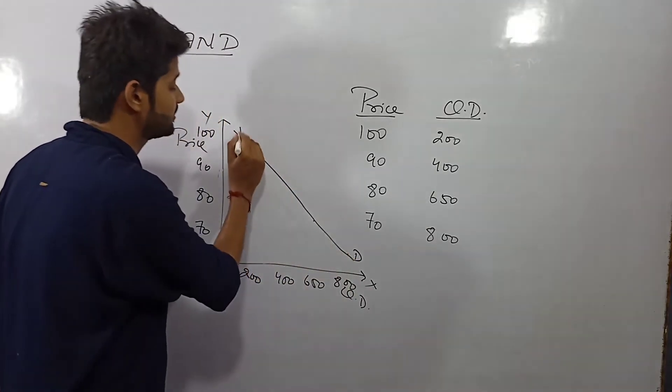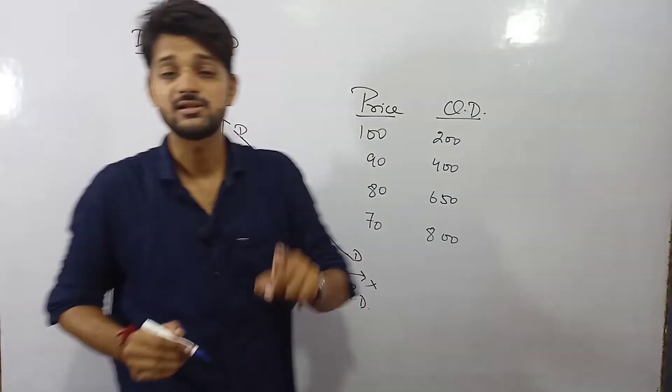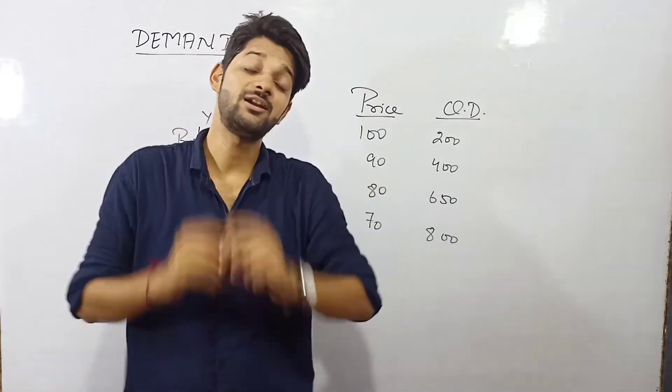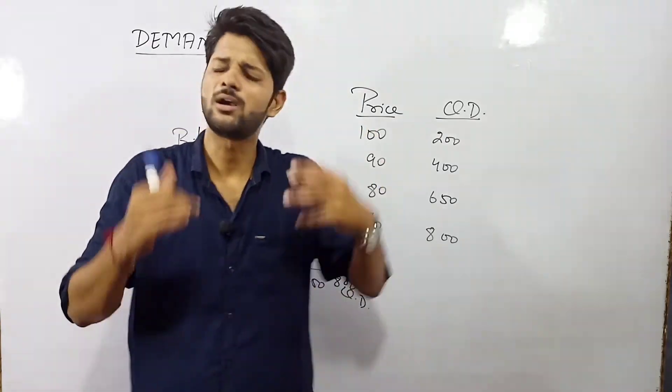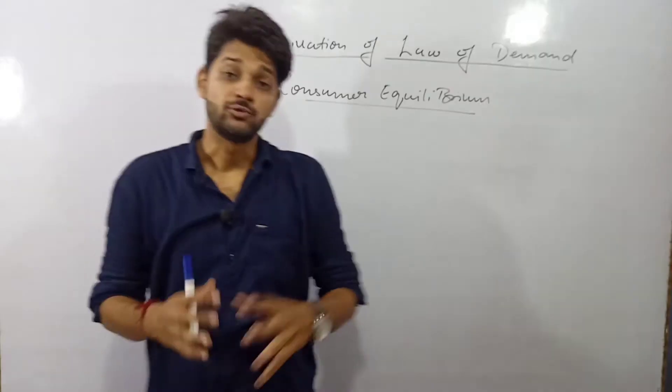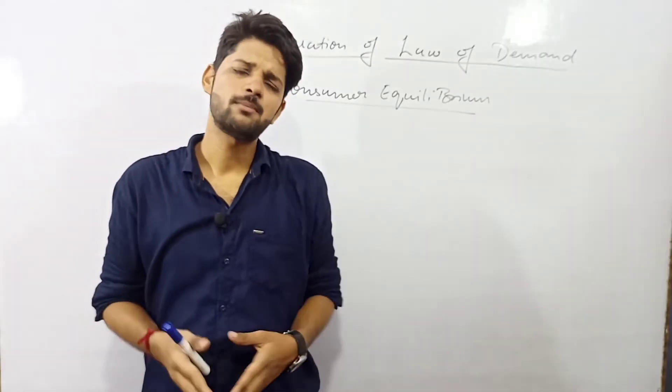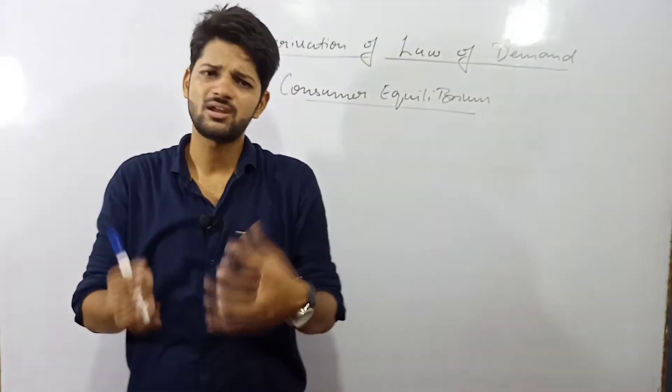This goes in the same process and this is what you get. That is, DD curve is a downward sloping and DD curve has a negative slope due to the inverse relationship with price and quantity demand. So this was the law of demand. Definition, assumption, schedule and graph.